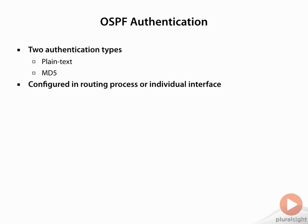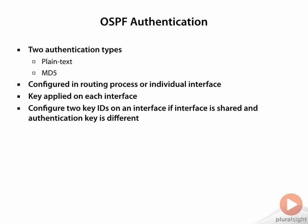We can configure this in the routing process, or we can configure it on individual interfaces — two ways to apply it — and I'll show you both methods. The key is still going to be applied on each interface, regardless of whether we enable authentication in the routing process or on the interface. We can also configure two key IDs on an interface if we have a shared interface and want to use different keys for different peers.